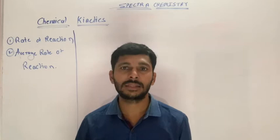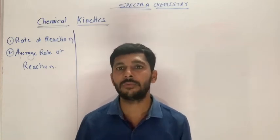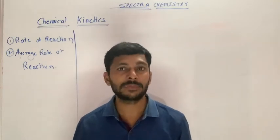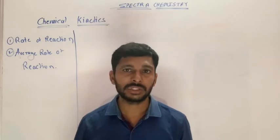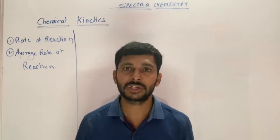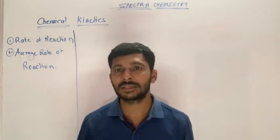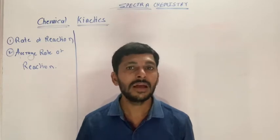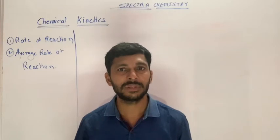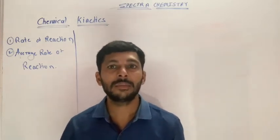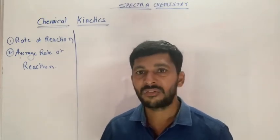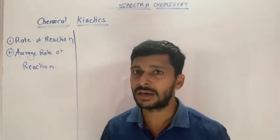We need to study the chemical reaction from chemical kinetics. What is chemical kinetics? It is a chemistry branch. We need to study chemical kinetics in physical chemistry. That means the study of the rate of a chemical reaction. We need to study the speed of chemical reaction and the factors affecting the rate of chemical reaction.